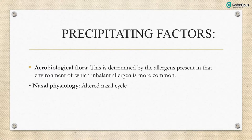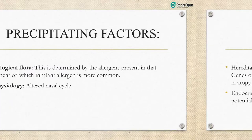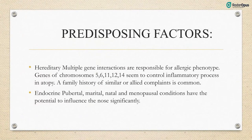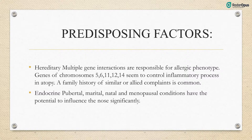Factors affecting allergic rhinitis are classified as precipitating and predisposing. Precipitating factors include aerobiological flora, determined by inhalant allergens present in the environment, and altered nasal cycle. Predisposing factors include heredity: multiple gene interactions are responsible for allergic phenotype. Genes on chromosomes 5, 6, 11, 12, and 14 seem to control the inflammatory process in atopy. A family history of similar complaints is common. Endocrine conditions — pubertal, marital, natal, and menopausal — have the potential to significantly influence the nose.